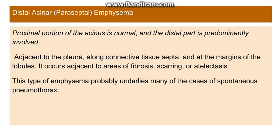The third type is distal acinar or paraseptal emphysema. Only the distal part of the acinus is involved, while the proximal part is normal. It occurs adjacent to septa — such as the pleura, connective tissue septa along the margins of lobules — and sometimes adjacent to areas of fibrosis, scarring, or atelectasis. This type leads to many cases of spontaneous pneumothorax because it occurs adjacent to the pleura.